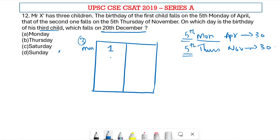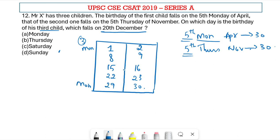So the next time Monday is going to repeat is on the 8th of April, obviously because from the 1st, after a 6-day gap, the 7th day is going to be a Monday again. And then 15th, 22nd, and 29th are going to be Mondays — this is one possibility. The next possibility is Monday occurring on the 2nd of April, then 9th, 16th, 23rd, and 30th.